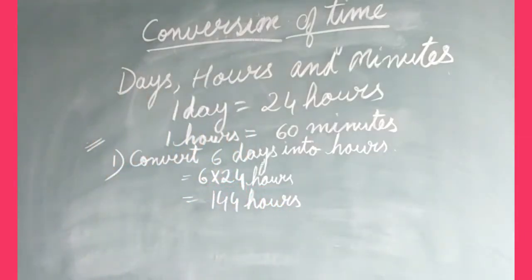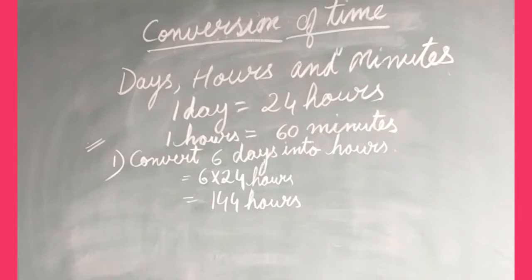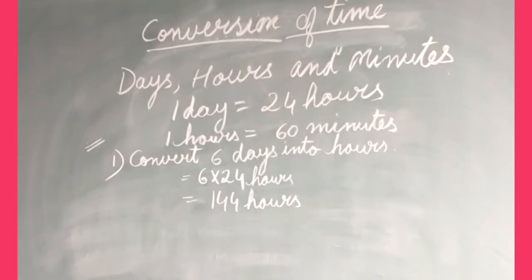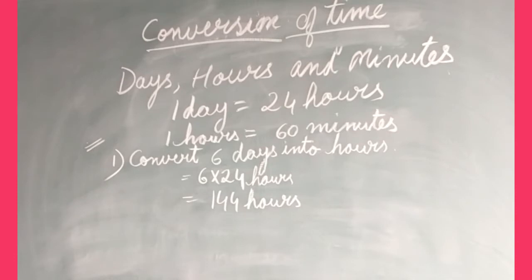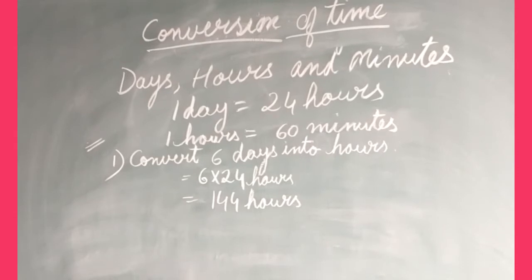Is it clear to you now? You have learned how to convert days into hours. One day equals 24 hours, so for 6 days you do 6 into 24 and get 144 hours. If it is given 5 days into hours, you will multiply 5 into 24 and get the answer.